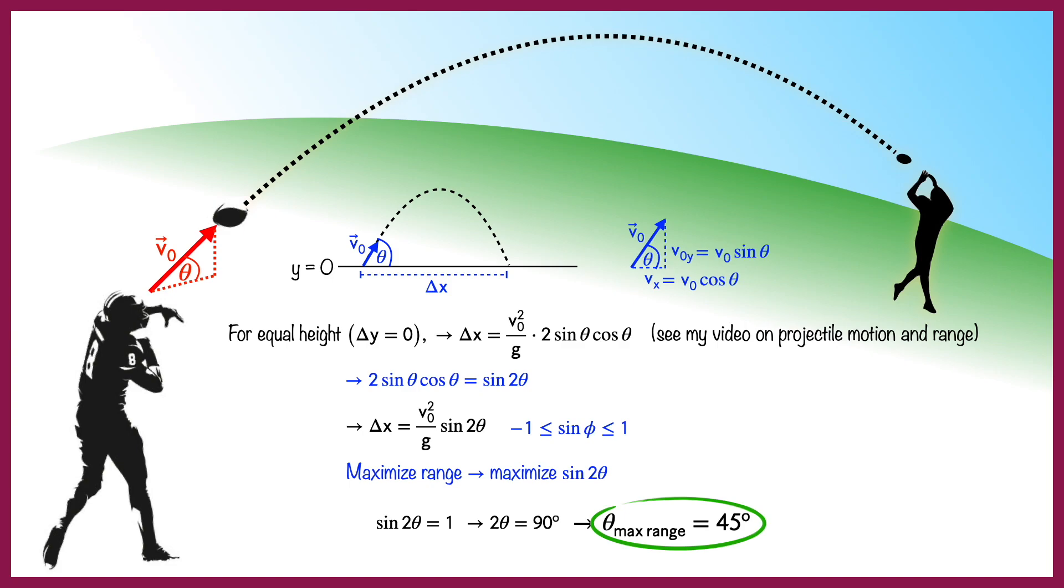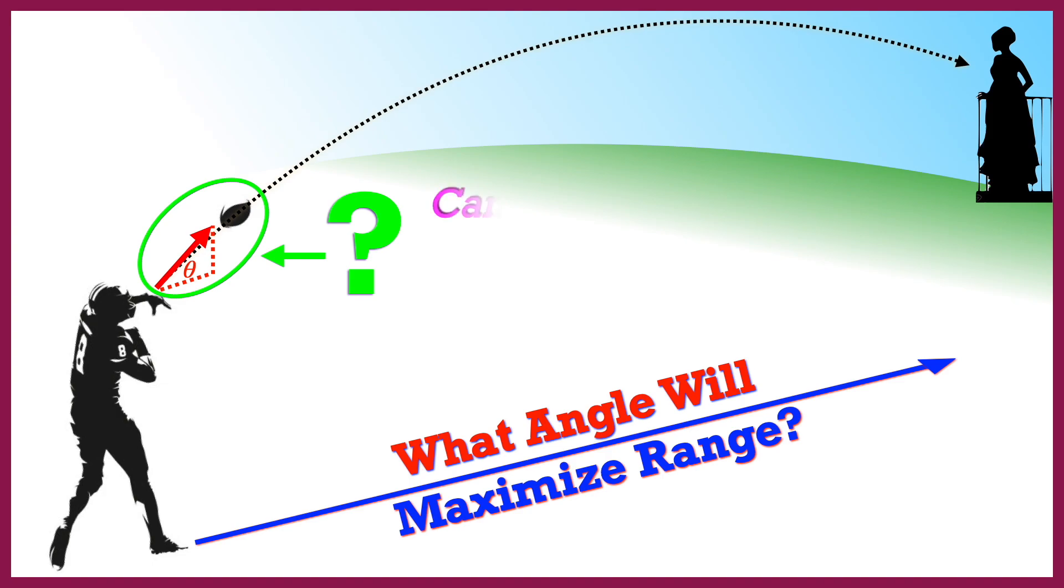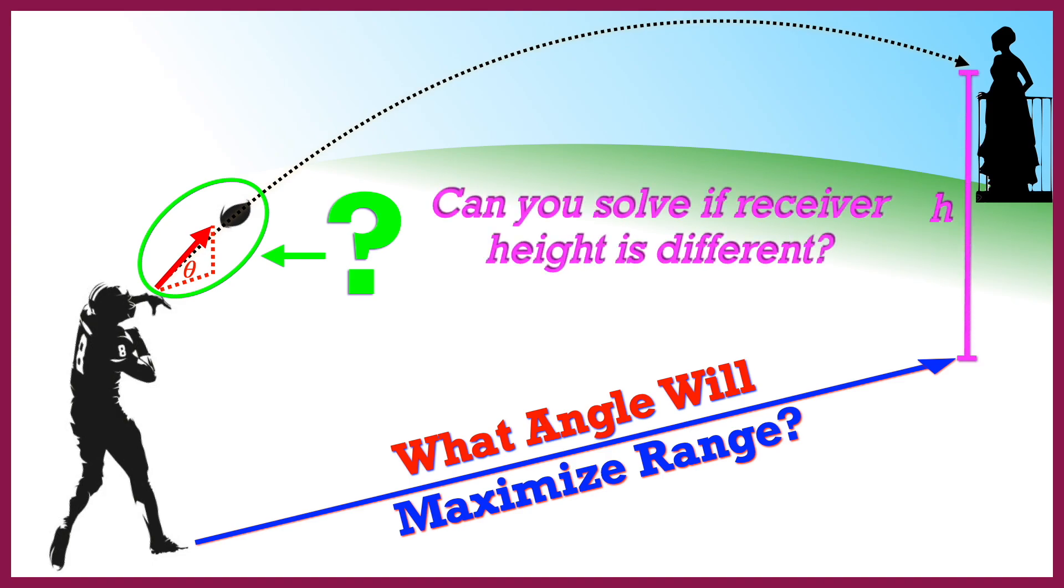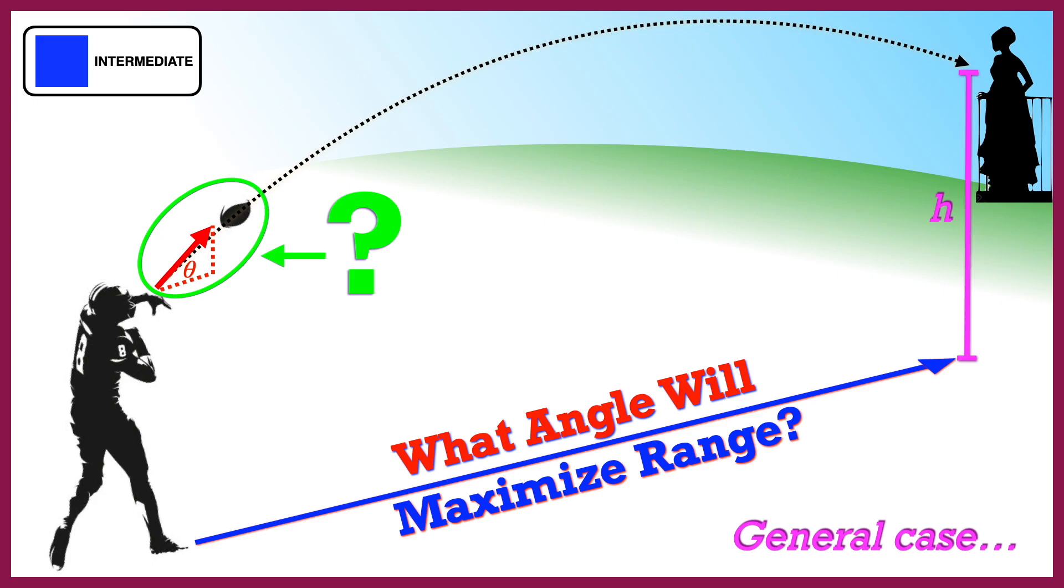Now that you know how to maximize the range in the case where the initial and final heights are the same, can you do it in the case where they're different? Meaning, can you maximize the range when the ball is thrown and caught at different heights? If you'd like to know how to solve this, this will be the subject of my next video where I will be looking at maximizing the range in the general case. So if you'd like to know how to do this and you enjoyed this video, be sure to like and subscribe and click the bell to be notified for the release of future physics videos.